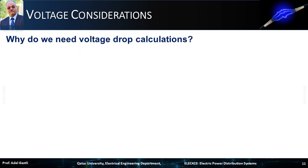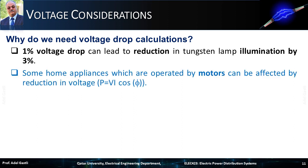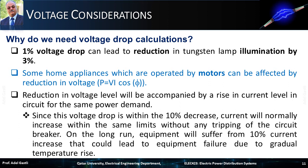One can ask, why do we need voltage drop calculations? To understand the importance and benefits, we can present some examples of the effect of voltage drop on the performance and efficiency of some loads. For instance, we know that 1% voltage drop can lead to a reduction in tungsten lamp illumination by 3%. We know also that some home appliances operated by motors can be seriously affected by reduction in voltage. Usually, for the same power demand, a reduction in voltage level will be accompanied by a rise in current level. Since this voltage drop is within the 10% decrease, current will normally increase within the same limits without any tripping of the circuit breaker. On the long run, equipment will suffer from 10% current increase that could lead to equipment failure due to gradual temperature rise.